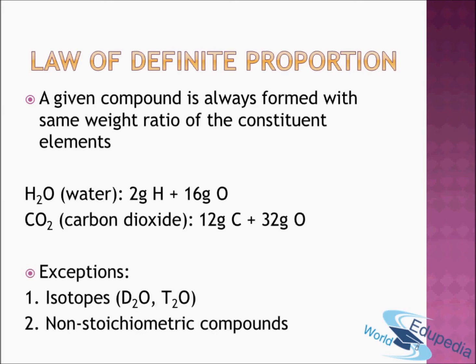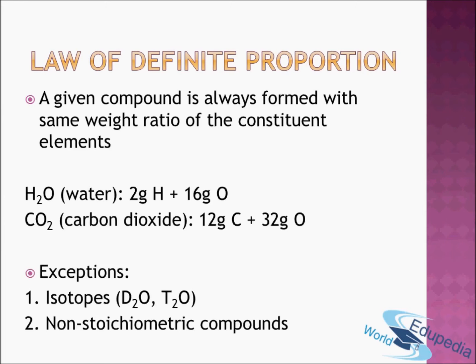There are two exceptions: first is isotopes, and the other is non-stoichiometric compounds. First, isotopes. Hydrogen has two other isotopes — one is deuterium represented by D, and one is tritium represented by T. In D₂O, which is called heavy water, the hydrogen atom actually weighs 4 grams per mole of molecules, whereas oxygen still weighs 16 grams. This change in ratio occurs because we haven't used the actual hydrogen atom — we have used an isotope of hydrogen.